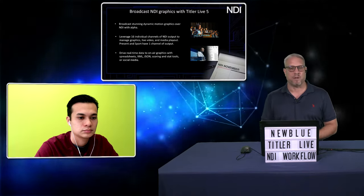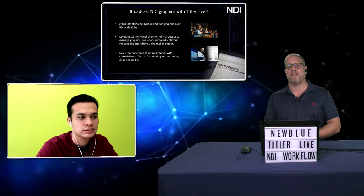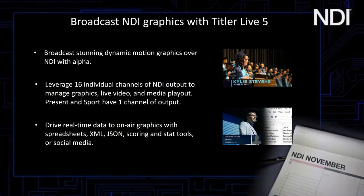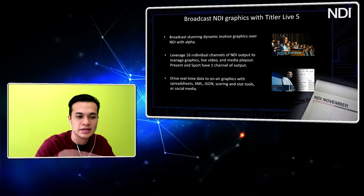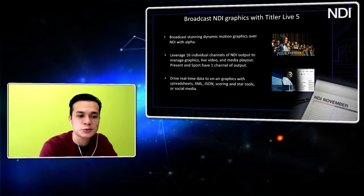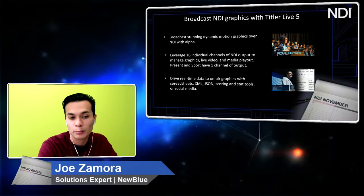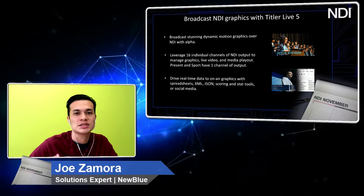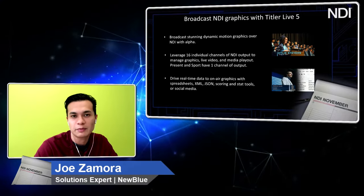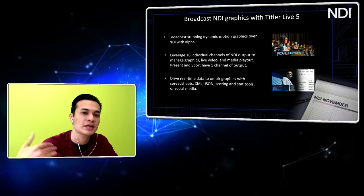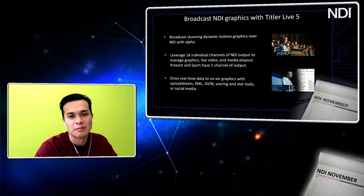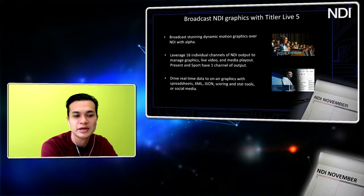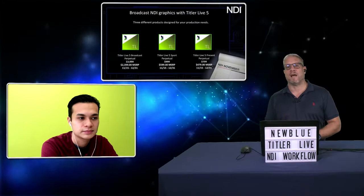Titler Live is a broadcast graphics tool that supports NDI capability. It's capable of a variety of different outputs, and for NDI it can output graphics with alpha up to 16 channels. Whether you're doing a sports production, school production, live event ceremony, hybrid event, or corporate event, you can use graphics templates to deliver data or customize your own. A brand new feature in the latest update is importing After Effects projects and broadcasting those over NDI.